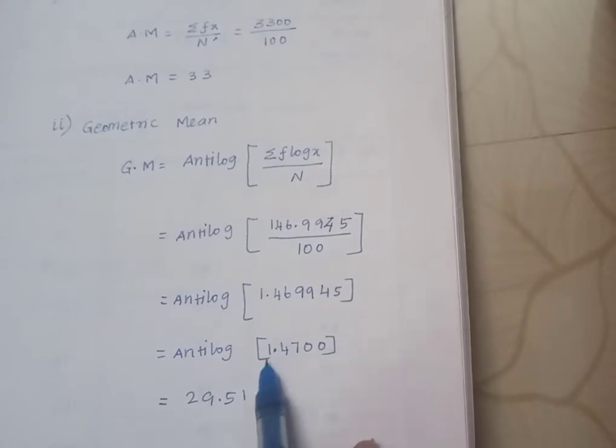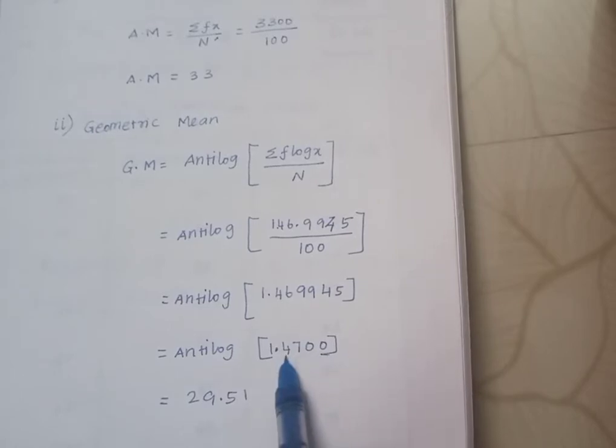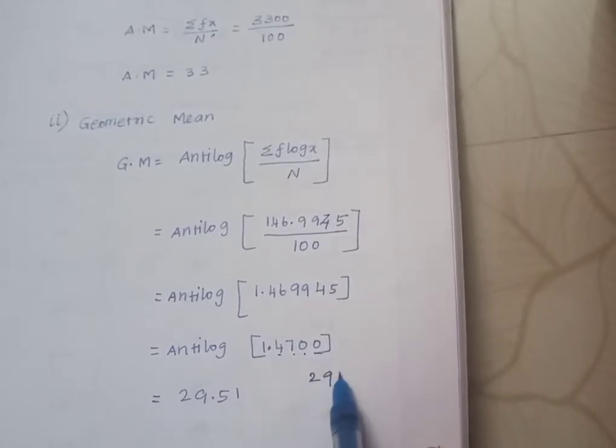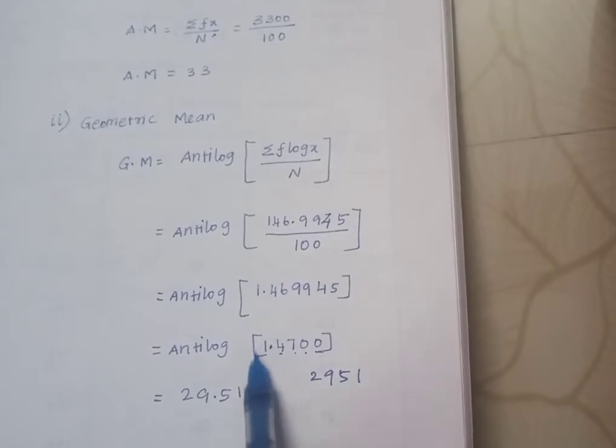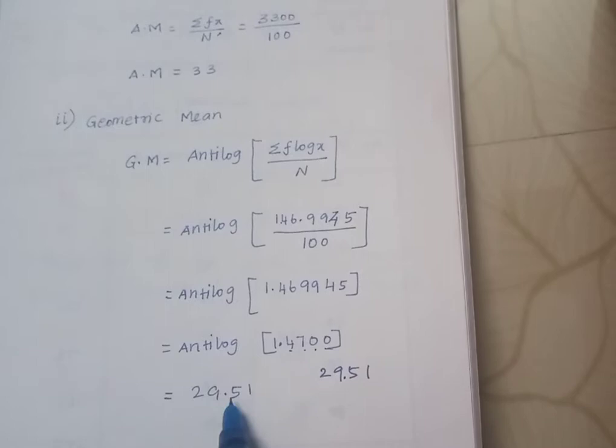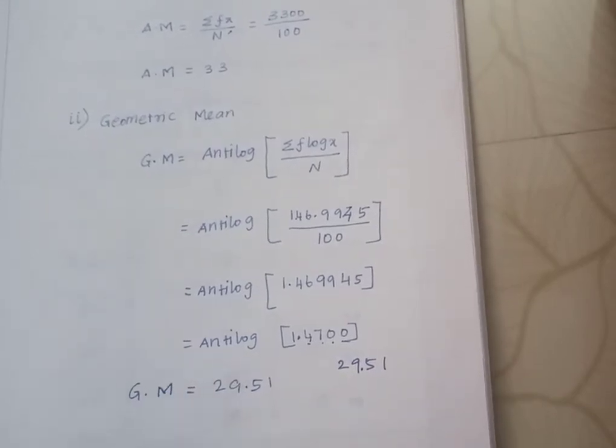Convert to 4 digits: 1.4700. After the point, 47, so 1.4700. The antilog of 1.4700 is 29.51. This is the geometric mean value.